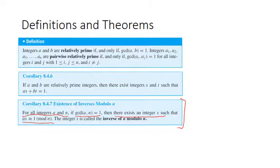The reason inverses are important is that they allow us to undo multiplication by a, in the same way that in the real numbers you would undo multiplication by 7 by dividing by 7. But when you're only working with integers, you can't do division. So we have the concept of inverses modulo n in order to undo multiplication. Now let's go over how to calculate these.